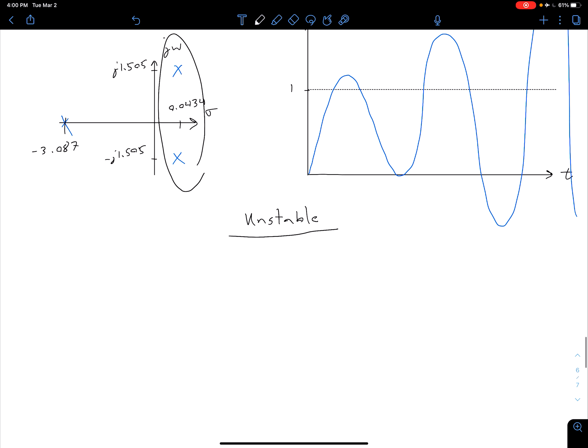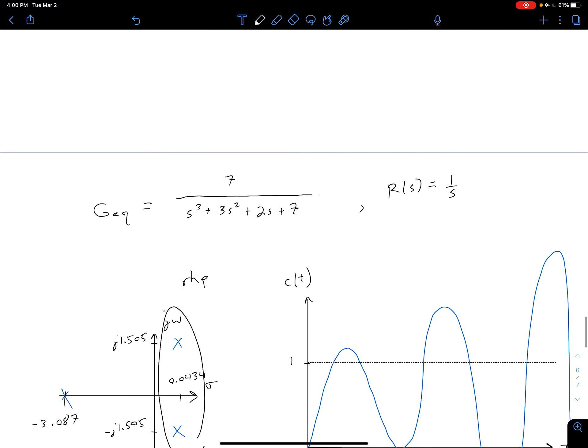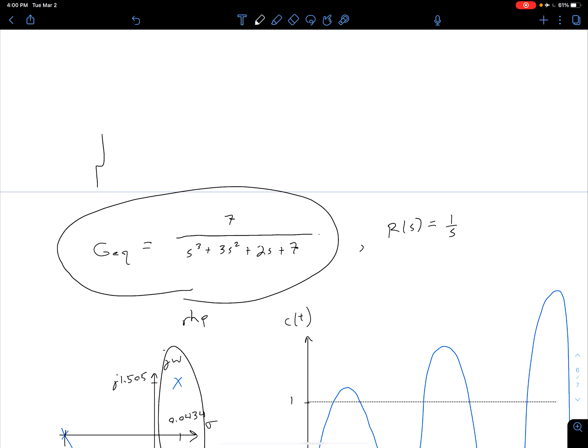So now to sort of drive home a point that I made in the previous video if we look at this equivalent transfer function, so our G_eq right here, we notice that this isn't flagged by either of our quick checks. So not flagged by either quick check.